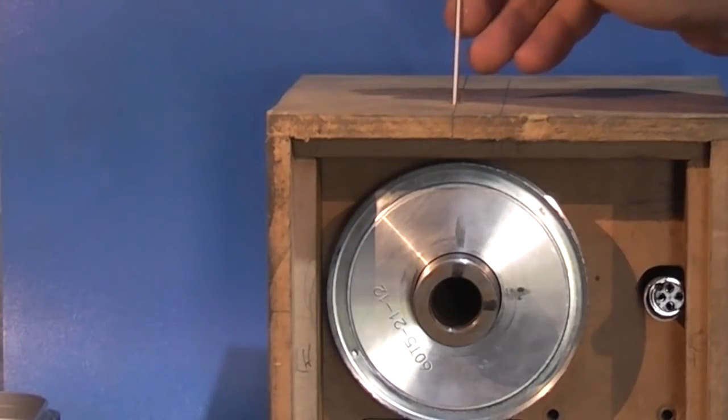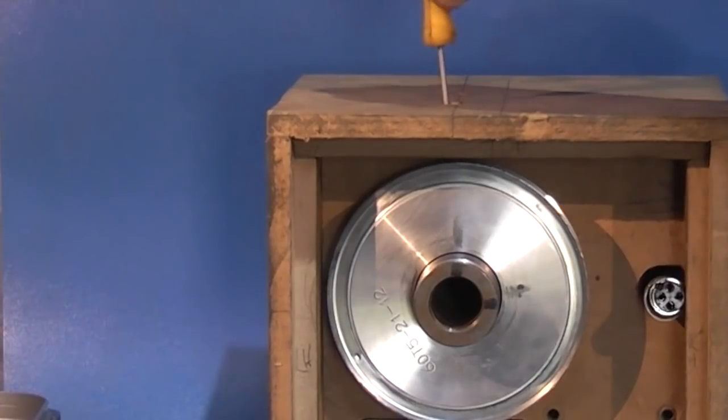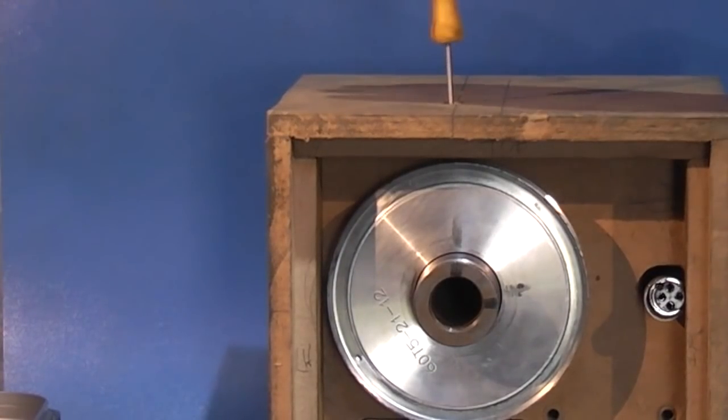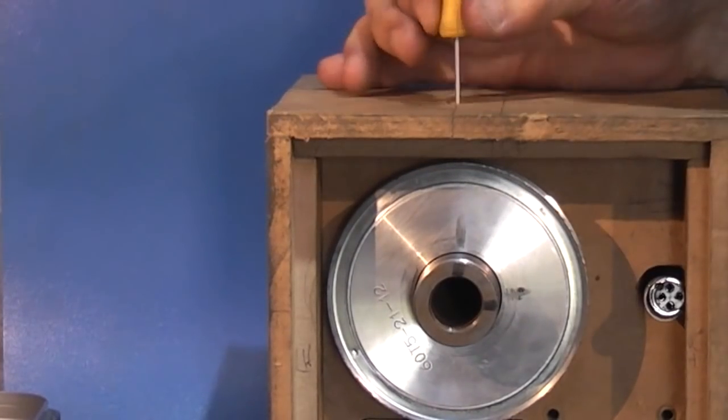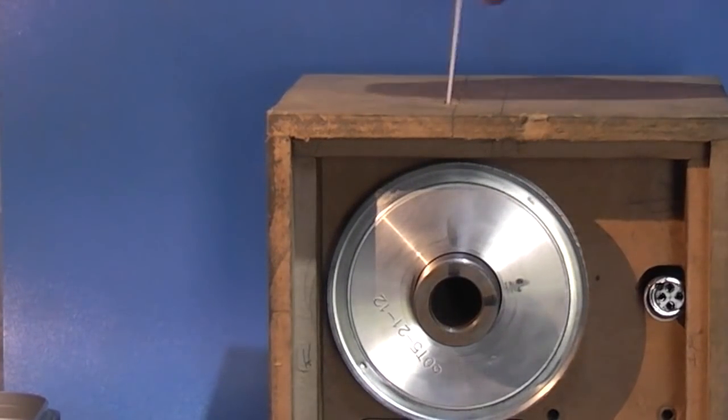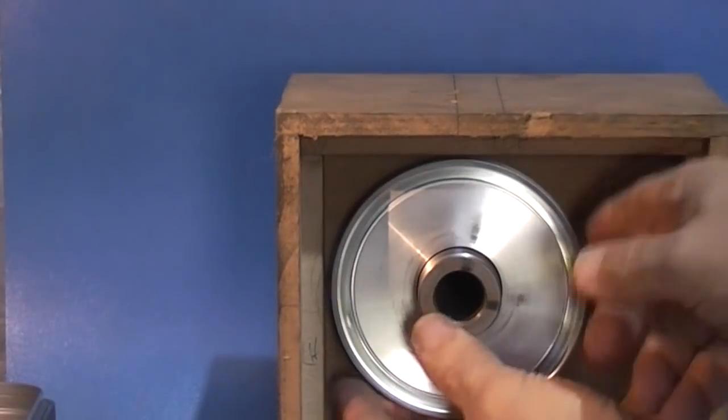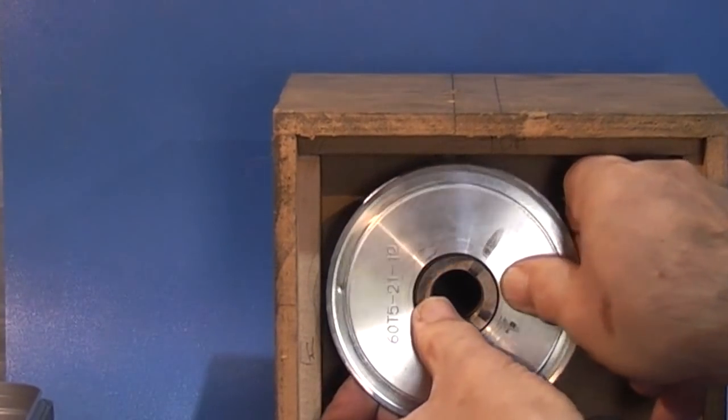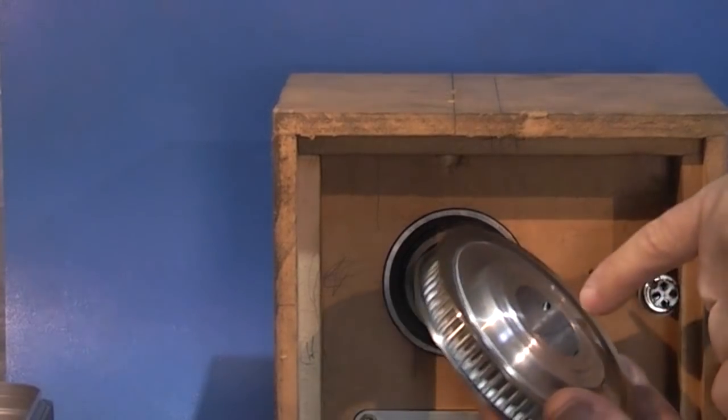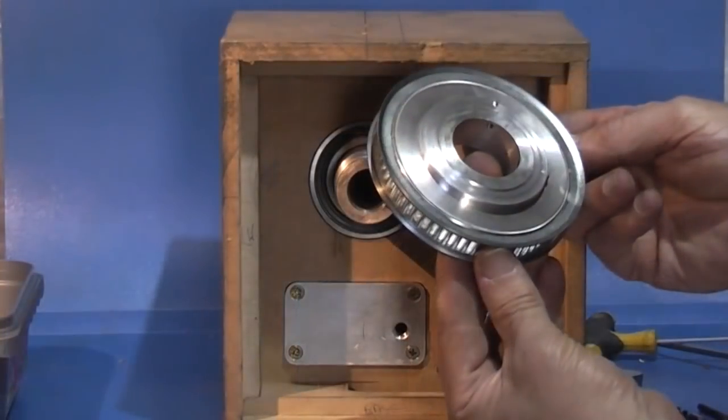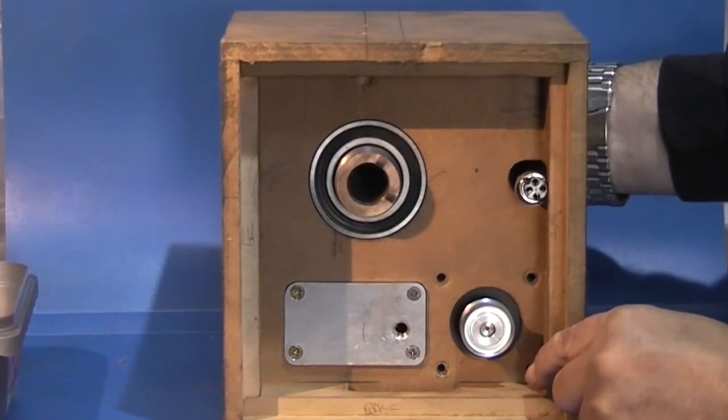This hole at the back here goes through into the hole where the grub screws are. The grub screws are on the other side of the pulley so if I take the two grub screws off, slacken them off. There we go, there's the grub screws right on the edge.